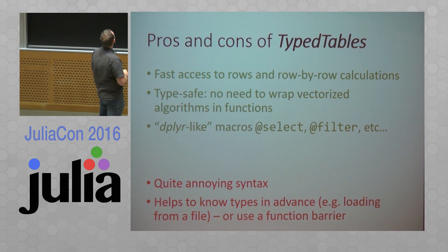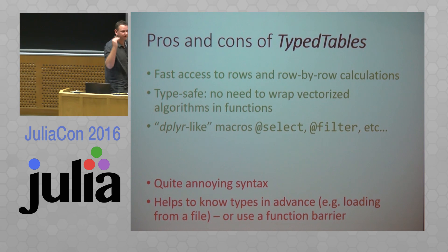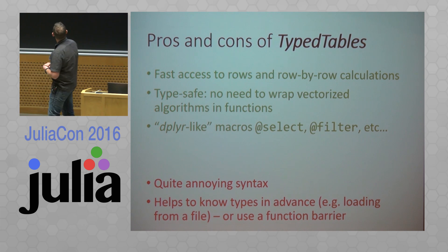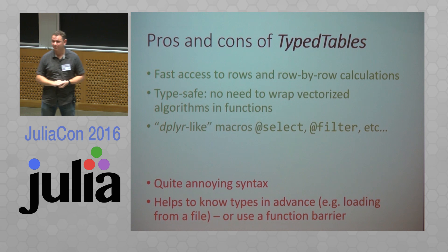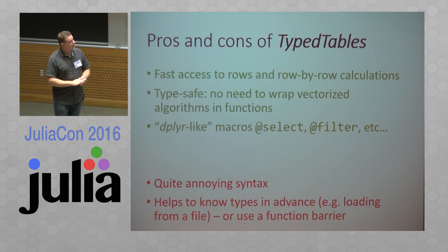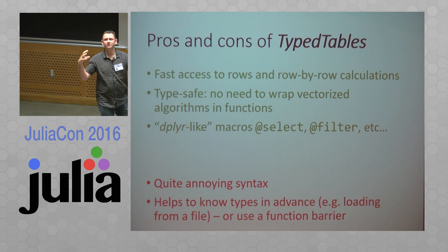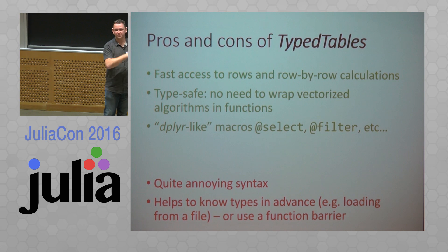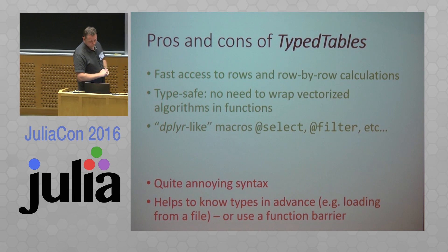There are some pros and cons. It is fast — something like a hundred times faster from my benchmarking than DataFrames for row-by-row access. That's a big thing if you actually want to think about accessing your data that way. It is type safe, so you don't have to add any more function barriers — you just write it like normal Julia code. I've also included some macros for select and filter, which implement pretty similar syntax to the type of thing Simon was just talking about, using anonymous function syntax so the macro can tell which things are coming from the table and which symbols are scoped from outside.